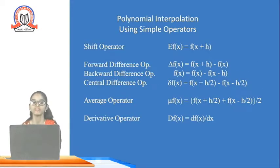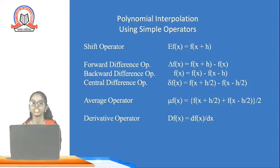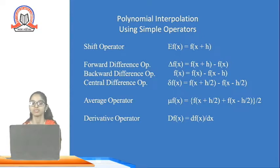Now, start with some operators — that is polynomial interpolation using simple operators. The first operator is the shift operator, defined as E f(x) = f(x + h). The forward difference operator is defined using delta: delta f(x) = f(x + h) minus f(x).